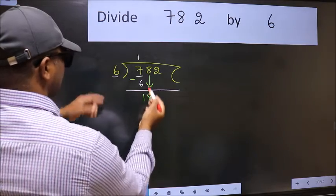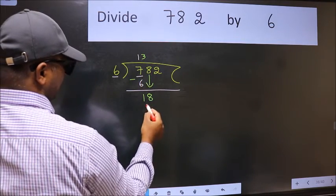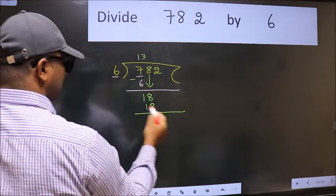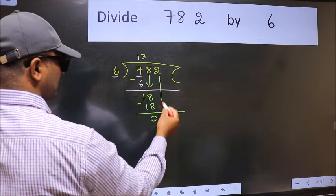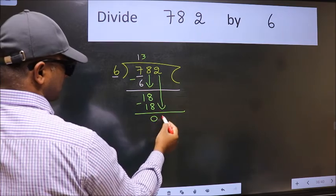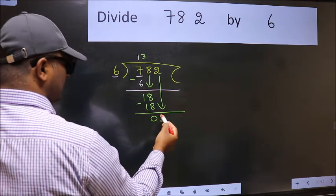When do we get 18 in 6 table? 6×3 is 18. Now we subtract. We get 0. After this, bring down the beside number. So 2 down.